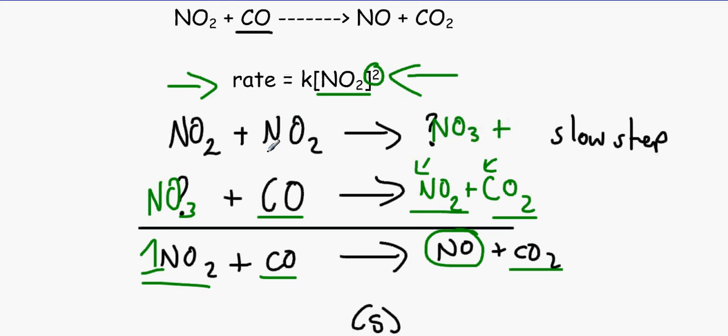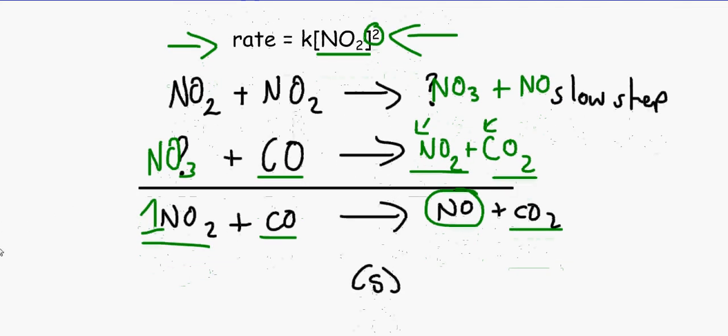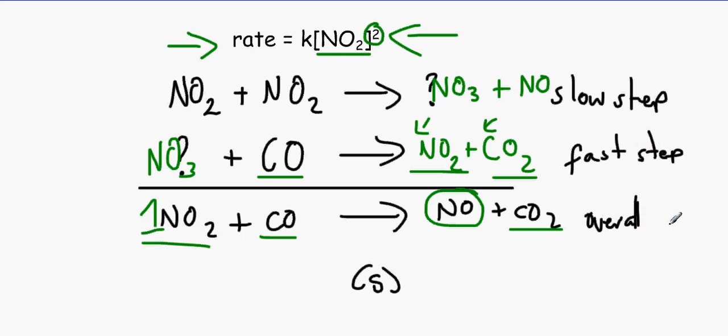So, in summary, what we've got to think about is to A, write the overall step. B, label the slow step and the fast step. Which I didn't do. Sorry. C, to write down whatever's missing from the slow step in the fast step. Which in this case was CO. We wrote it in the fast step.